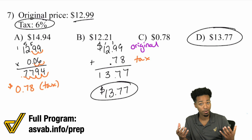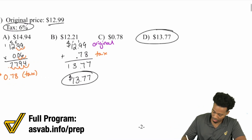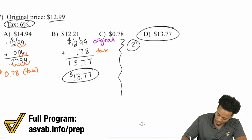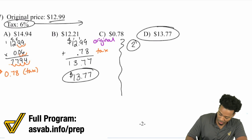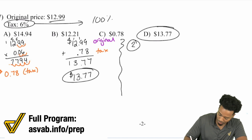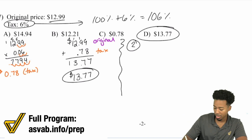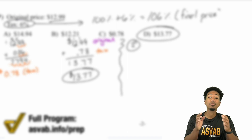That's one way — find the amount of tax and add it back. You're adding because it's a tax and you're paying more. The other way is to do it in one step. With a 6% tax: 100% + 6% = 106%. That's the final percentage, and we'll multiply by that directly.